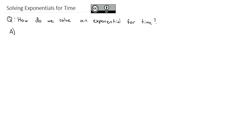The short answer for how we solve for an exponent is we use a special function called a logarithm. What a logarithm is, is really just an exponential function rewritten. It's a way that we rewrite the exponent.